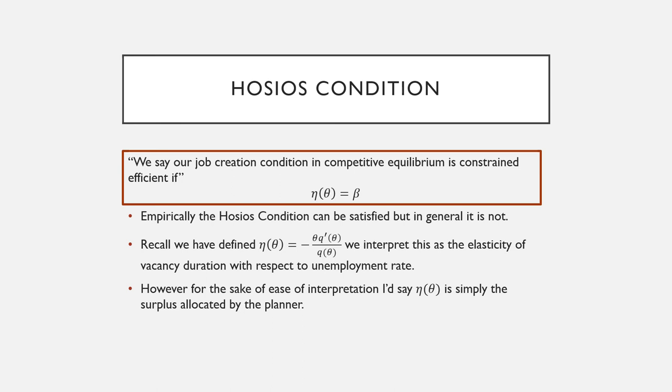However, for the sake of this interpretation, I'm just calling η(θ) as the surplus allocated by the planner compared to the surplus allocated through a Nash bargaining environment. Even though beta here would be an exogenous term, it's something that we need to think about.